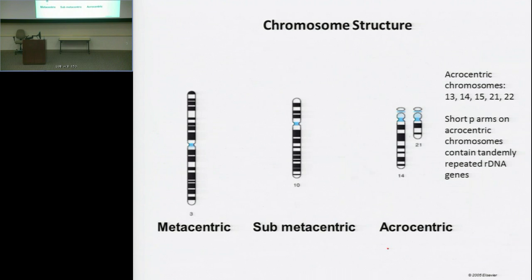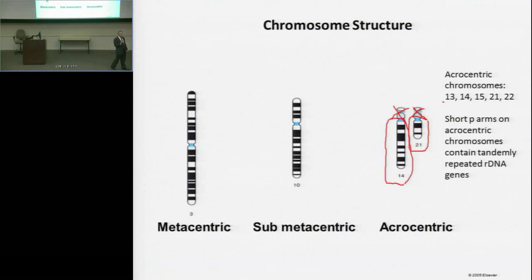That's when two acrocentric chromosomes fuse together so that, for example, we would have the Q-arm of chromosome 14 joined to the Q-arm of chromosome 21, losing both of the short arms of those two chromosomes. That is not a problem because we have at least three other chromosomes that contain the same sequences.